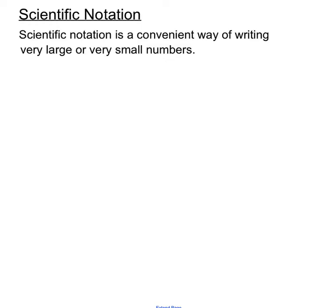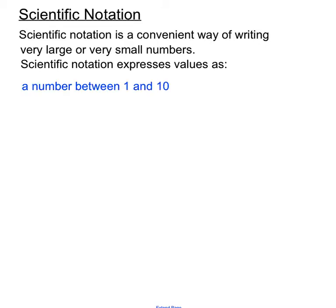Hello and welcome to a video on scientific notation. Scientific notation is a convenient way of writing very large or very small numbers. It expresses values as a number between 1 and 10 combined with that being multiplied by 10 to a power of some number.